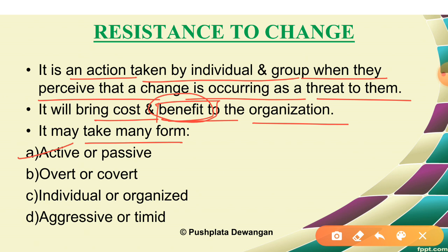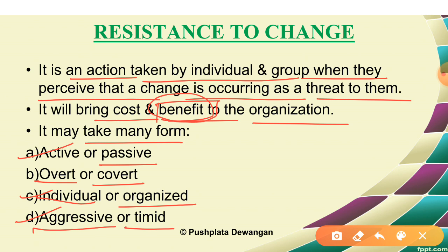Resistance to change may take many forms: active or passive — active means it is actively shown by employee behavior, while passive means it is not openly shown. Overt and covert — overt means resistance expressed through behavior, covert means it is hidden. It may be shown by individual employees or by a group, known as organized resistance. It can also be aggressive, such as strikes or lockdowns, or timid, meaning it is hidden within employee behavior.